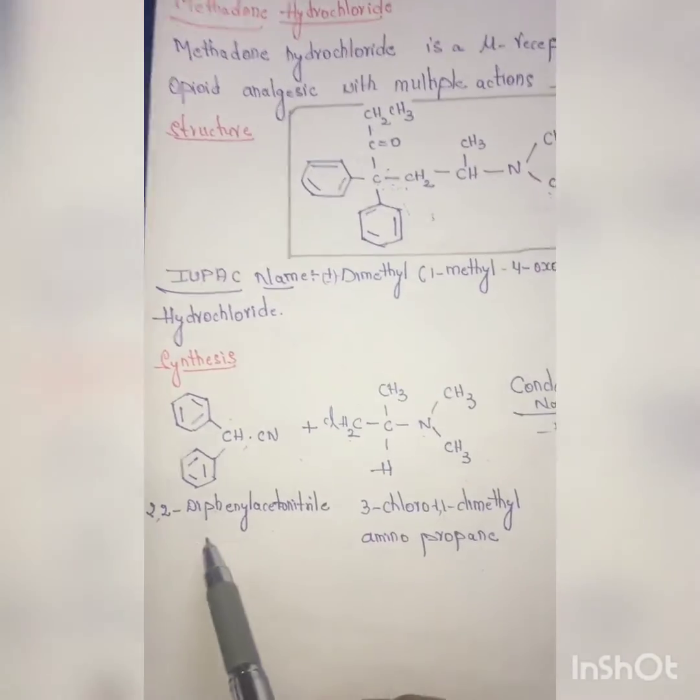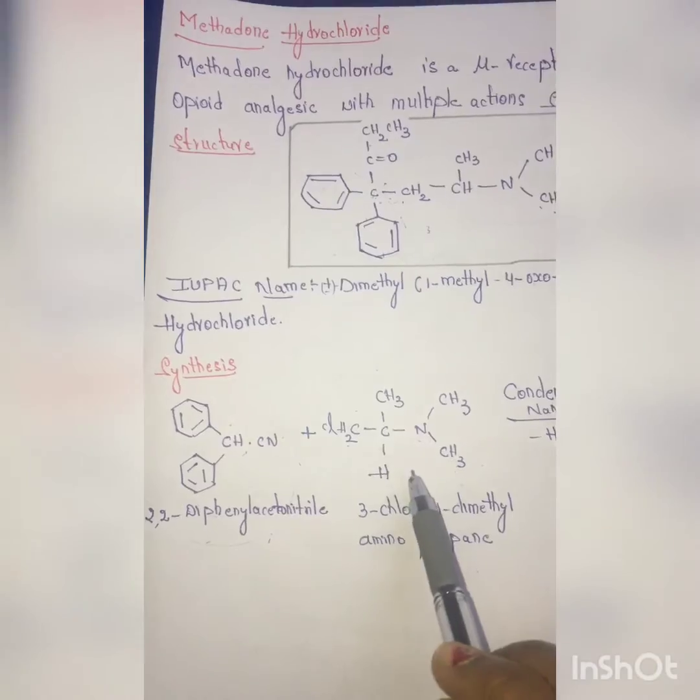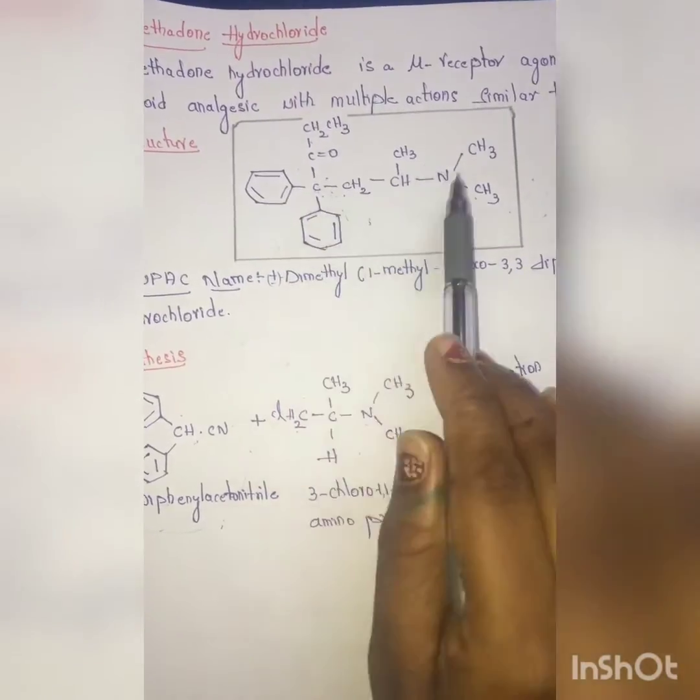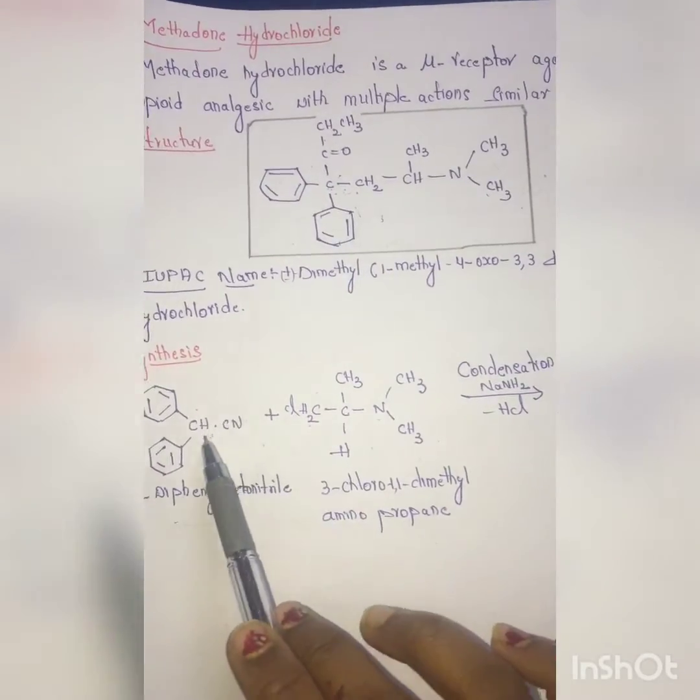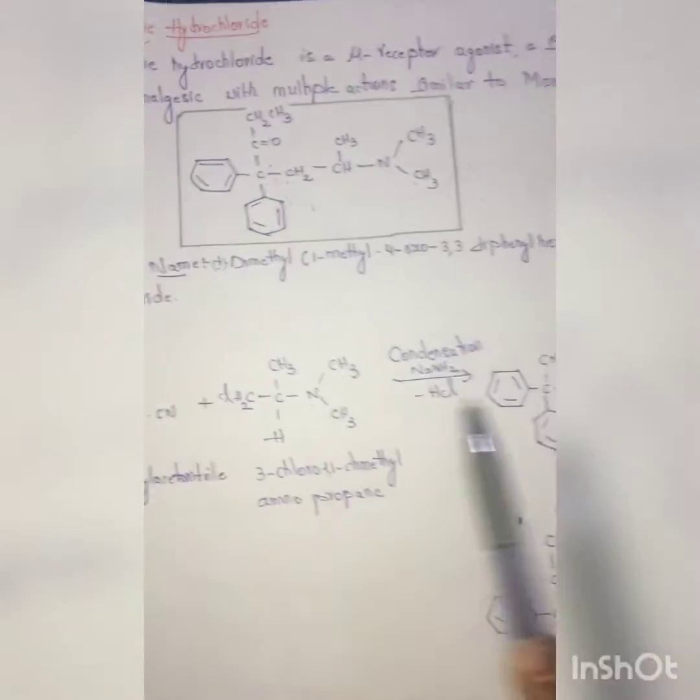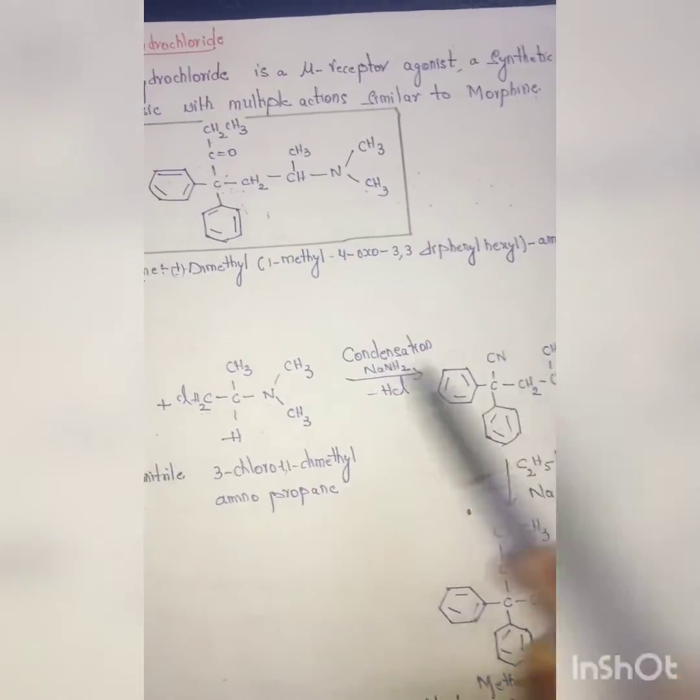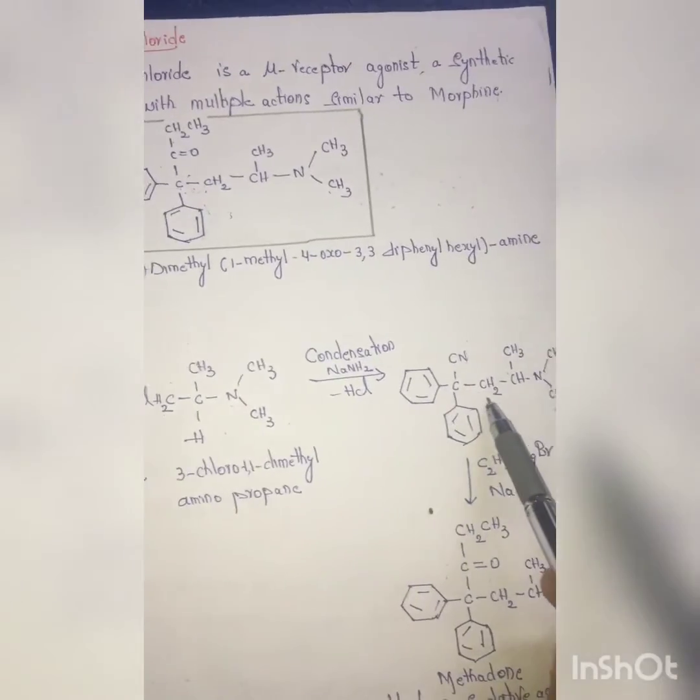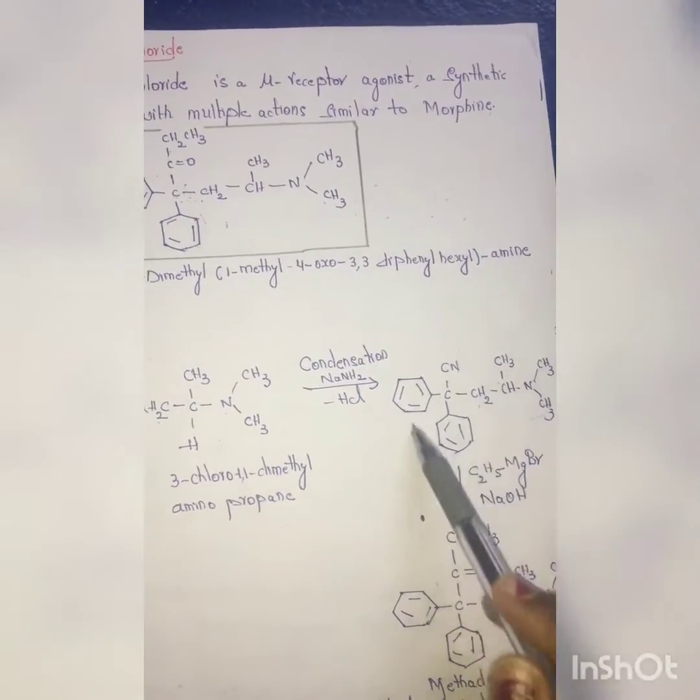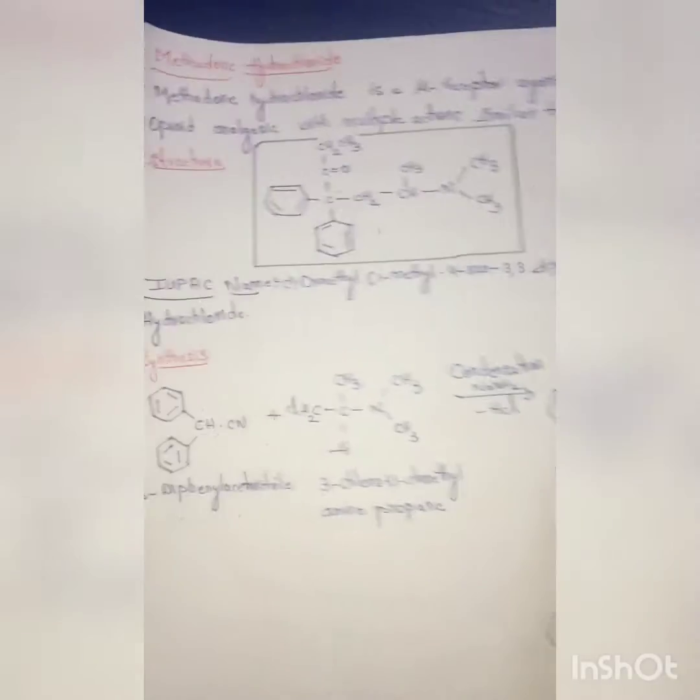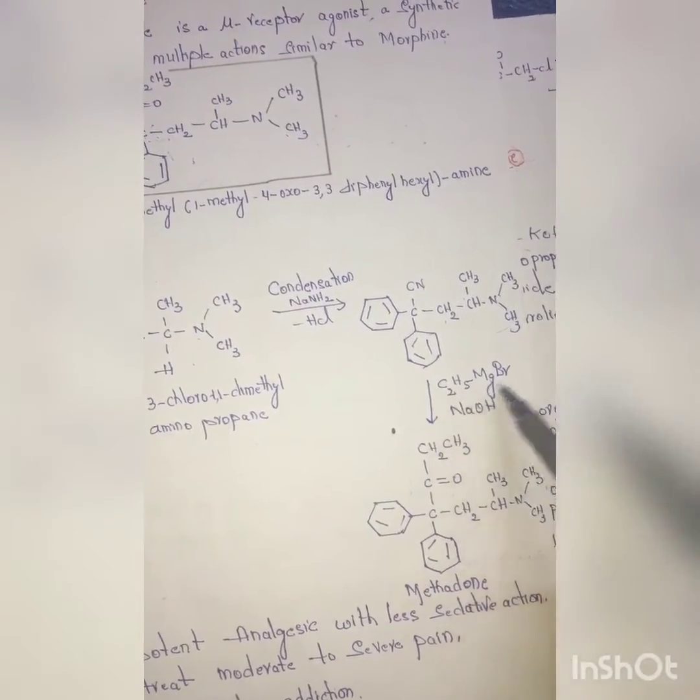When 2,2-diphenyl acetonitrile and 3-chloro-1,1-dimethylaminopropane undergo condensation, HCl is removed. The carbon bearing the CN group gets attached to the CH2-CH-N(CH3)2 moiety, forming an intermediate.